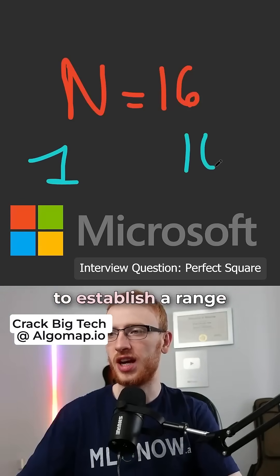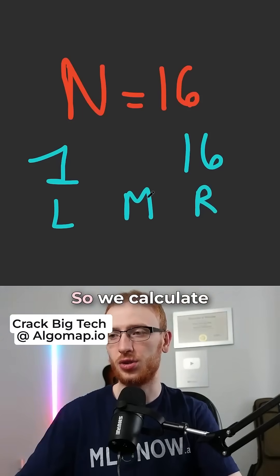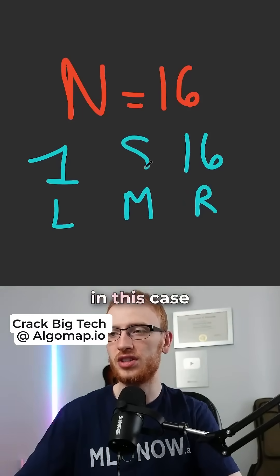A more efficient approach would be to establish a range of values. Then we repeatedly do a binary search, so we calculate a middle value, which in this case would be 8.